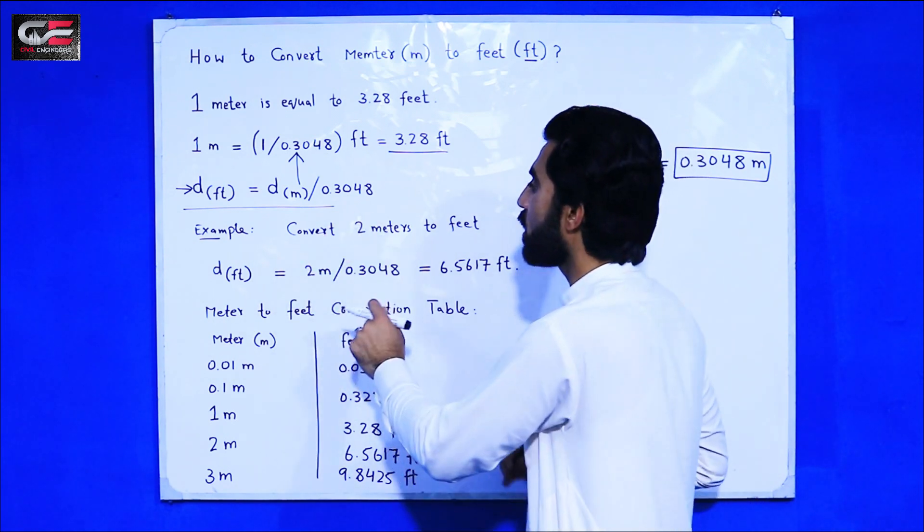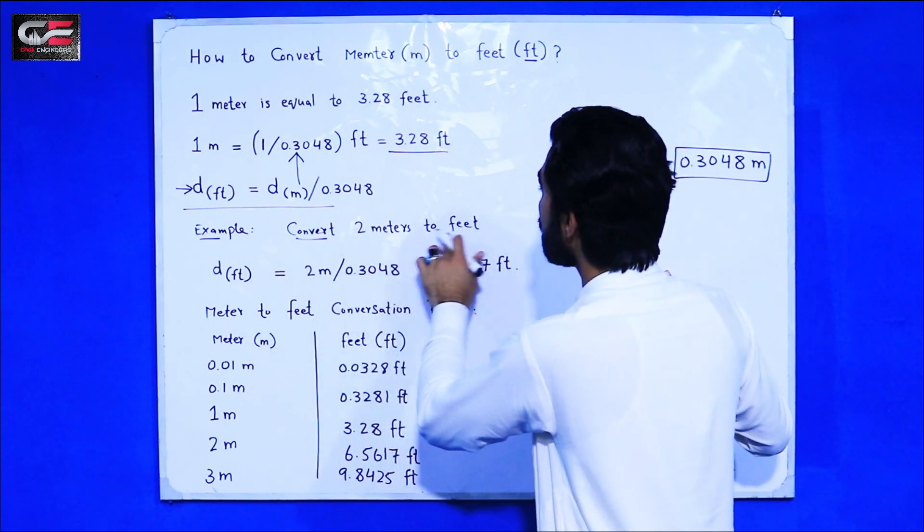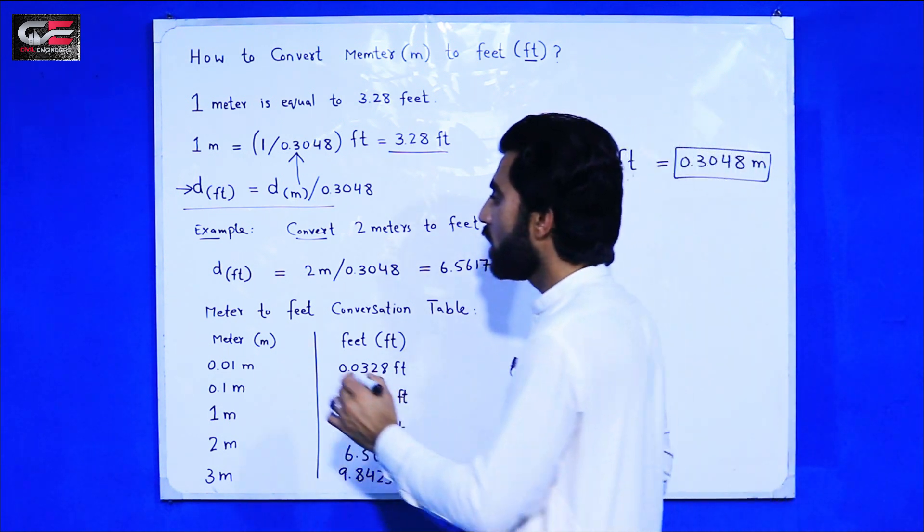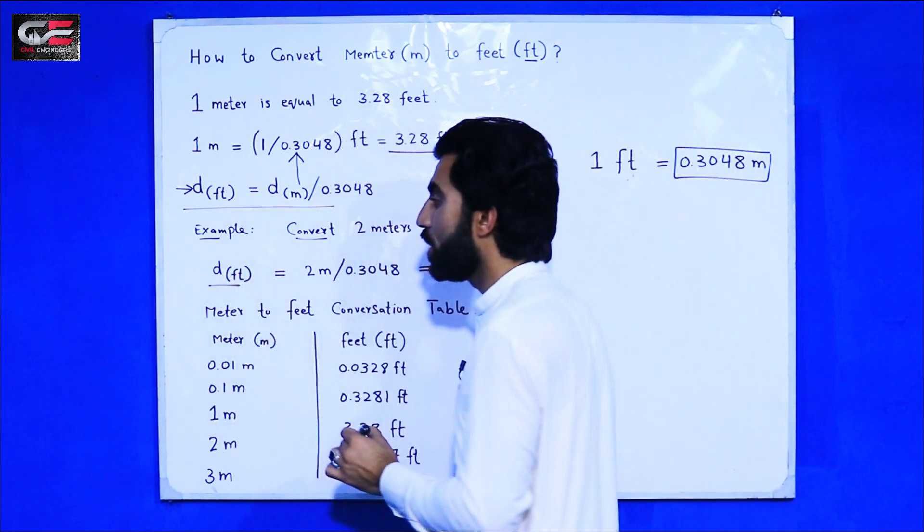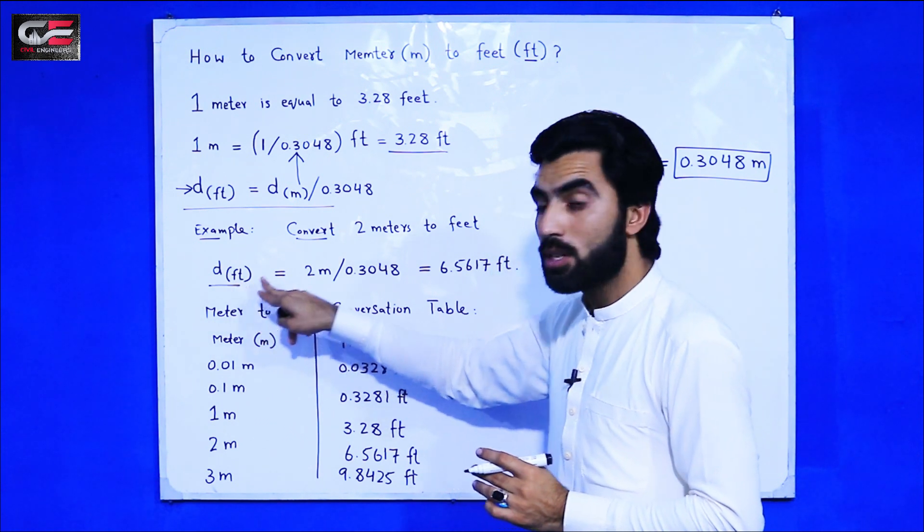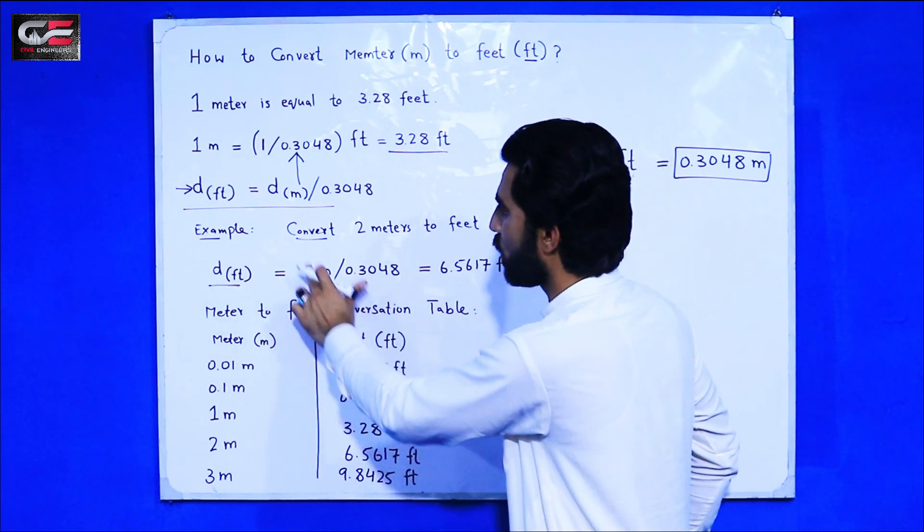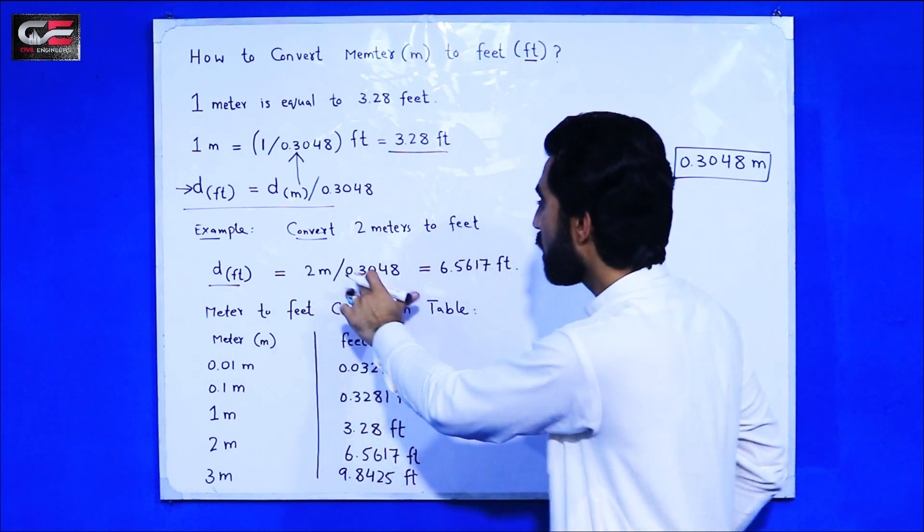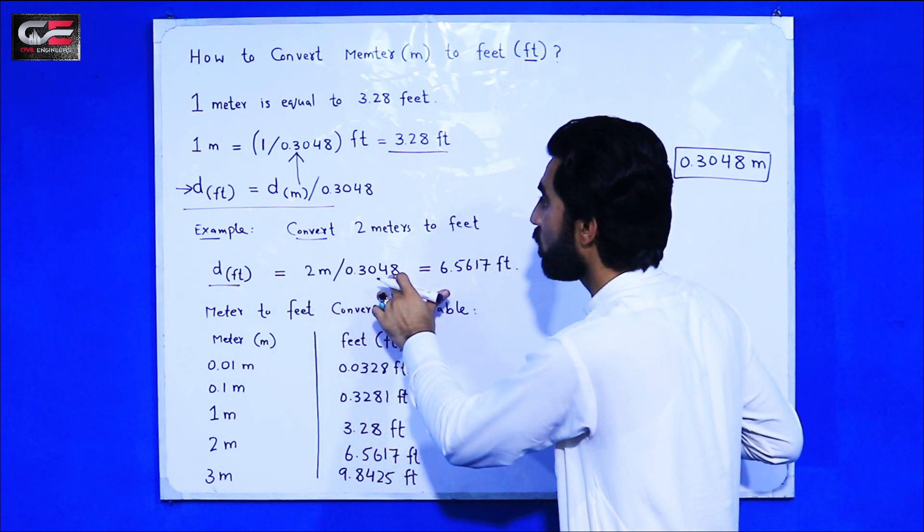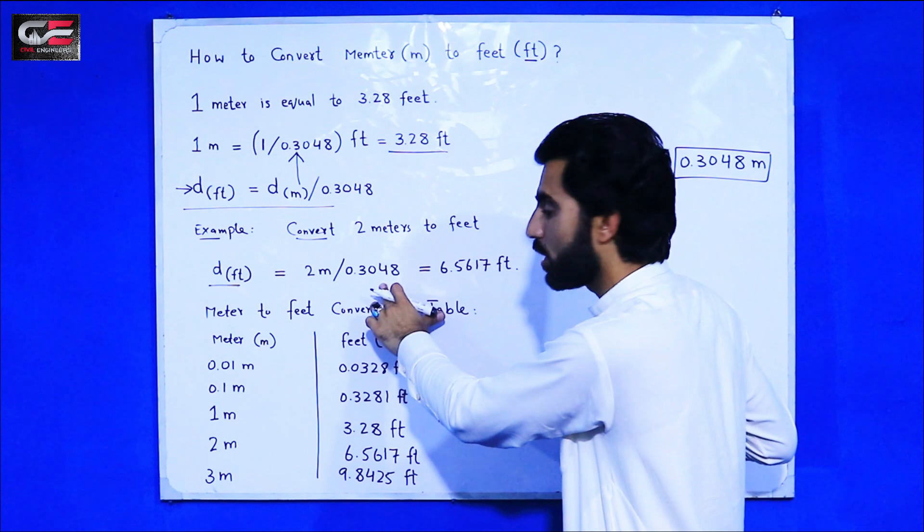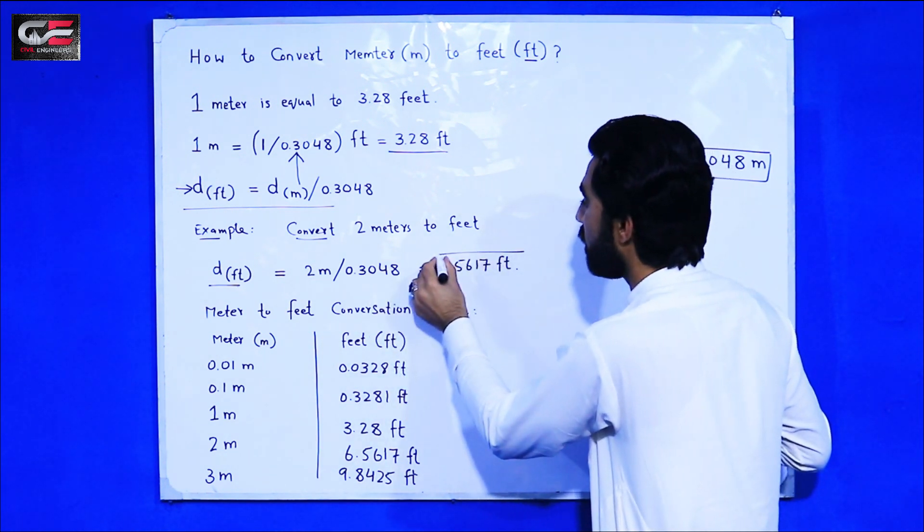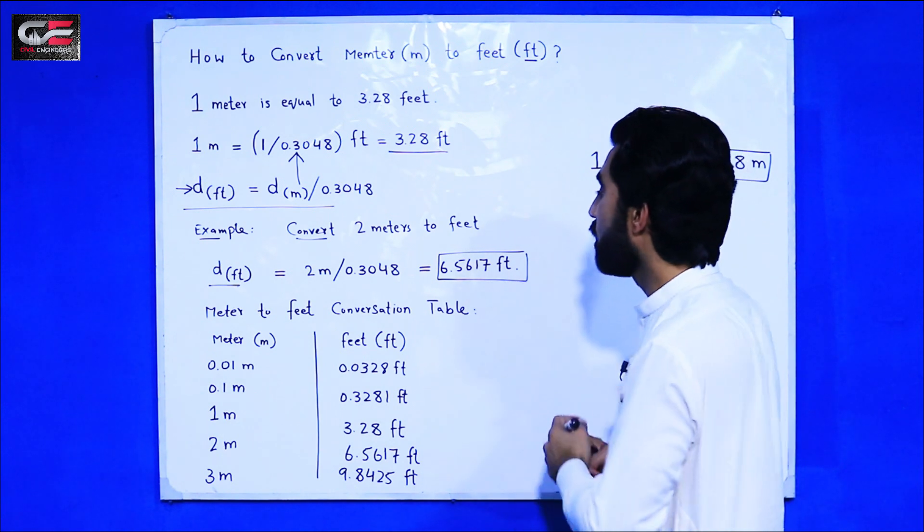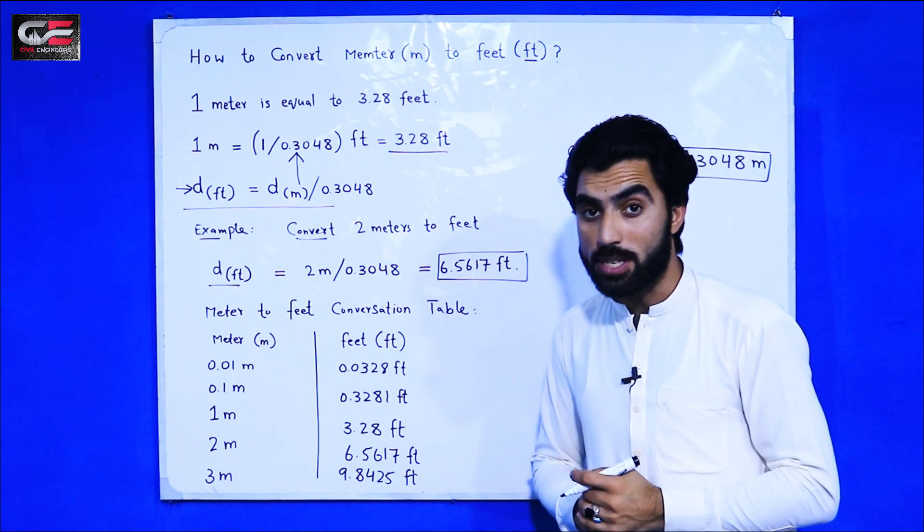For example, you can see this is the example. Convert 2 meter to feet. How can you convert 2 meters to feet? So here distance in feet, we need distance in feet, is equal to 2 meter divided by 0.3048. Then we have in 2 meter, we have 6.5617 feet.